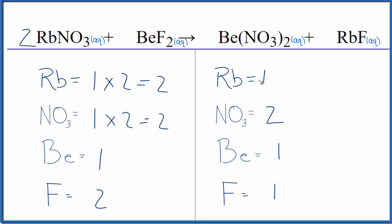Now the rubidiums aren't balanced. Put a two in front of the rubidium fluoride, one times two. That balances the rubidiums. For the fluorine, one times two gives us two.